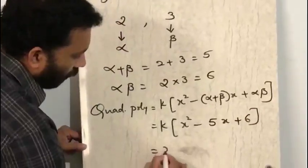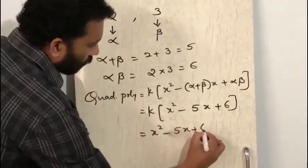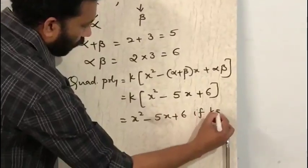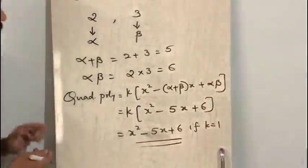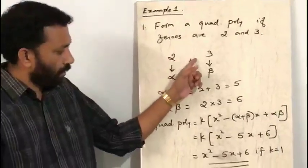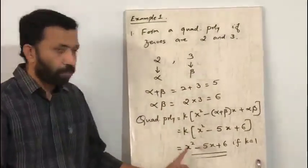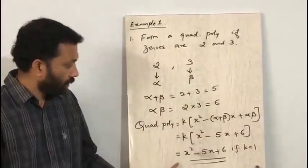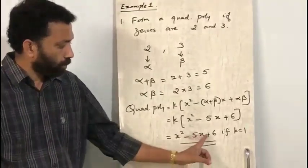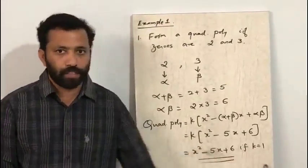That gives us x squared minus 5x plus 6, when k is equal to 1. So if two zeros are given we can find the corresponding quadratic polynomial, which is x squared minus 5x plus 6 when k equals 1.